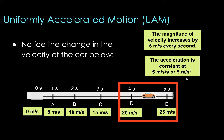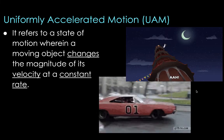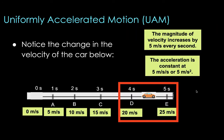Simply because within those one-second time intervals, the change in velocity was always five meters per second — so the acceleration is five meters per second squared. That's what UAM is: a state of motion where the object changes the magnitude of its velocity at a constant rate. Take note that this could also work the other way — meaning the object could be slowing down by five meters per second every second. What matters is that the change in the magnitude of velocity is constant, whether increasing or decreasing.